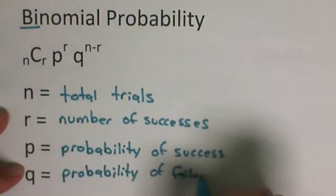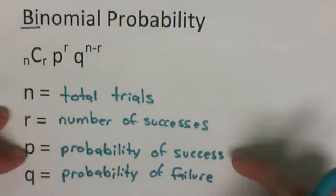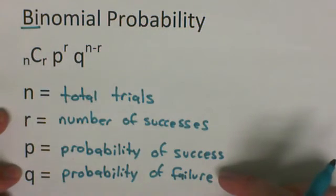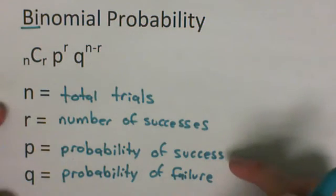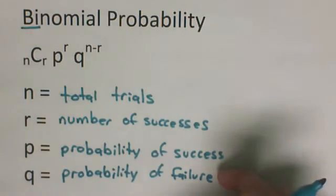So these two are complements of each other. If the probability of success is 40%, then we'd expect the probability of failure to be 60%. If the probability of success is 1 out of 6, then the probability of failure is 5 out of 6.